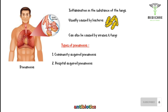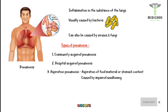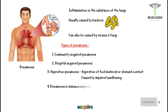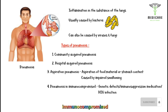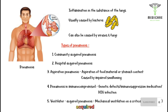Aspiration pneumonia occurs following aspiration of food material or stomach content, caused by impaired swallowing. Immunocompromised patients can acquire pneumonia due to a genetic defect, immunosuppressive medication, or HIV infection. Because the patient is immunocompromised, this type is considered a different entity. Ventilator-associated pneumonia is acquired through mechanical ventilation on a critical care unit.